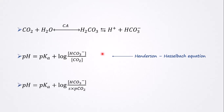Instead of using the carbon dioxide concentration directly, we replace it with the partial pressure of carbon dioxide in blood, which is easier to measure. The S in the equation signifies solubility — S is the solubility, and p is the partial pressure of carbon dioxide.